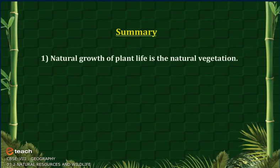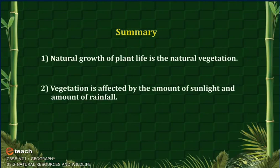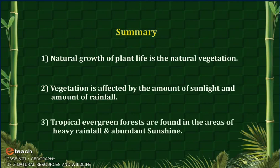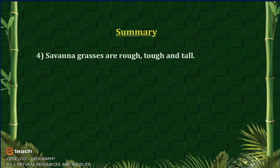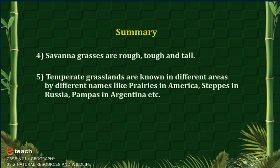Summary: Natural growth of plant life is natural vegetation. Vegetation is affected by the amount of sunlight and rainfall. Tropical evergreen forests are found in areas of heavy rainfall and abundant sunshine. Savanna grasses are rough, tough and tall. Temperate grasslands are known by different names in different areas, like prairies in America, steppes in Russia, and pampas in Argentina.